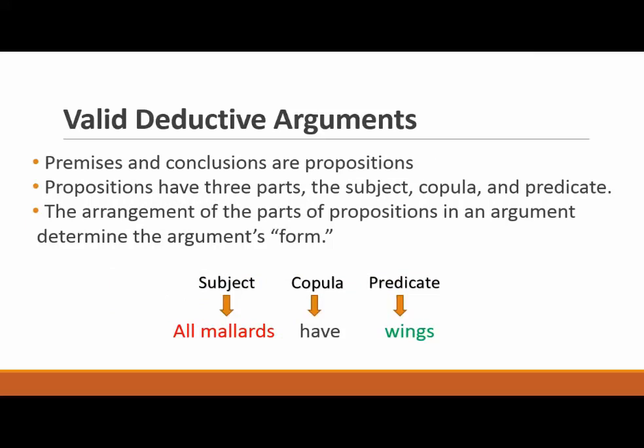So what is it that needs to be arranged correctly for an argument to be valid? For starters, in classical logic, the premises and conclusion need to be stated as propositions. Classical logic identifies four basic types of propositions that will allow us to apply the rules of logic.